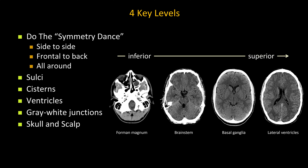The four levels to focus on, from inferior to superior, are the foramen magnum, brainstem, basal ganglia, and lateral ventricle. When you inspect each axial view, make sure to compare side to side — symmetry is important; what's on the left should look like what's on the right. Look all around and inspect all the sulci to make sure they are patent and not being compressed. Look at all the CSF spaces such as cisterns and ventricles, and inspect gray-white matter differentiation to make sure it is preserved.